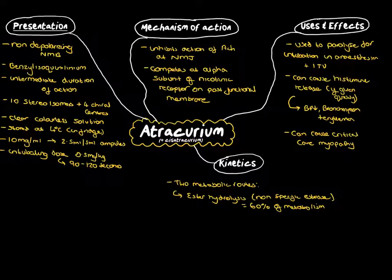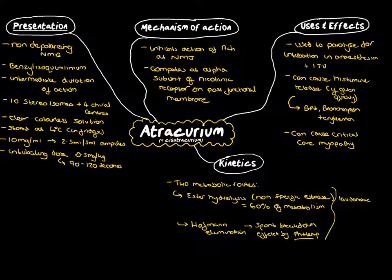The second element of metabolism of atracurium is Hoffman degradation or Hoffman elimination. This is essentially a spontaneous breakdown of atracurium within the circulating plasma. What that does is that also leads down to the formation of laudanosine, but also a monoacrylate. Both of these, again, are completely normal by-products, and they have no actions on the neuromuscular junction at all.